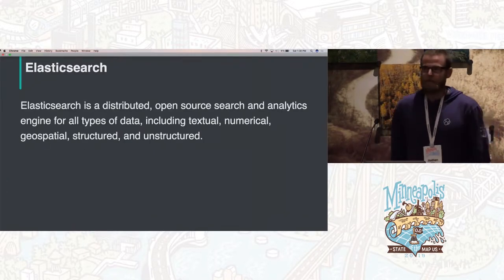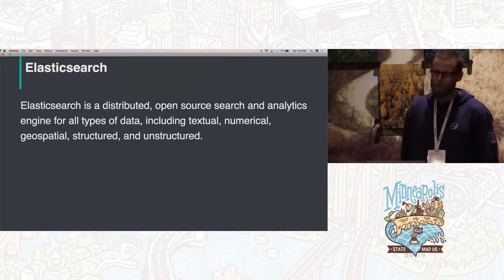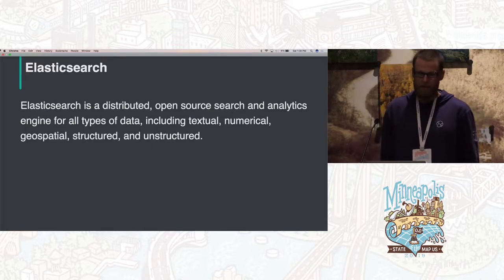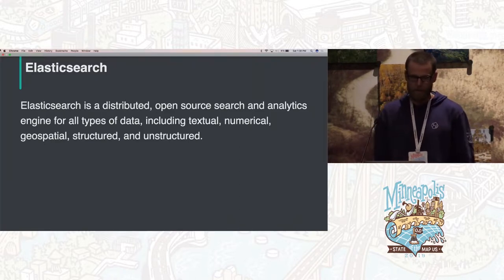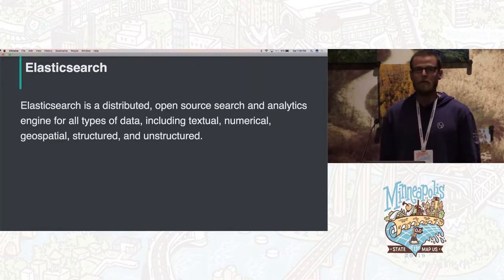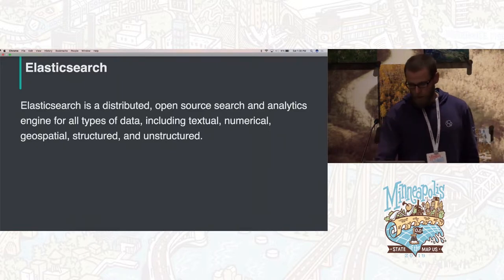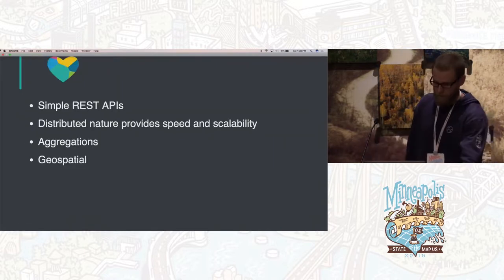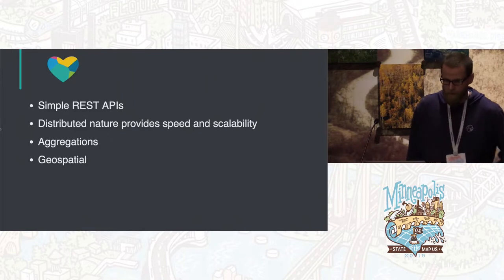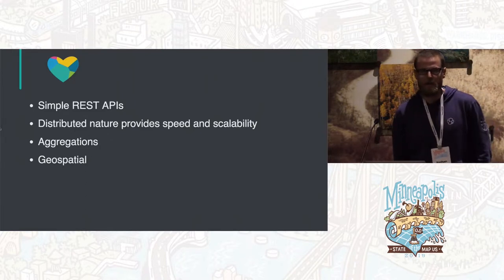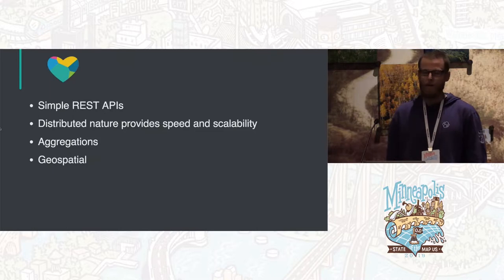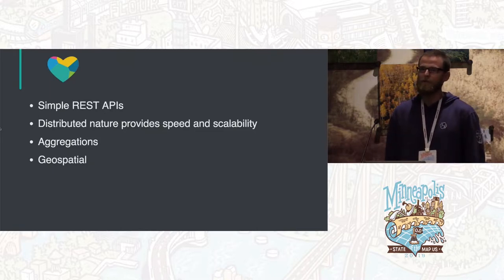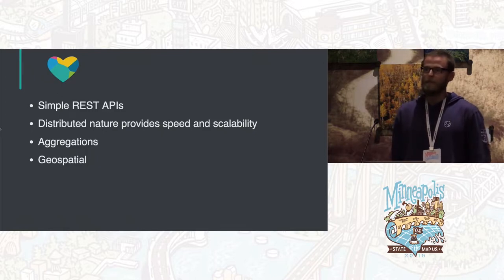Elasticsearch is a distributed open source search and analytics engine that can handle all types of different data — full-text search, numerical data, geospatial data, structured and unstructured. What really excited me as a developer is its really simple REST API, making it easy to access data directly from the datastore. It's distributed by nature, so you can search your data super fast and it will scale to meet your needs as your data grows.